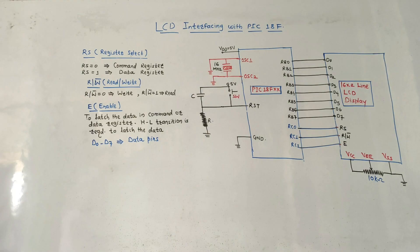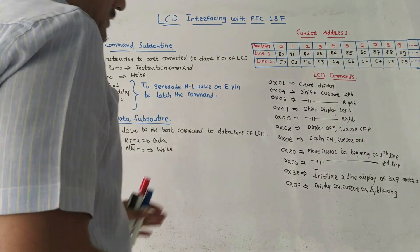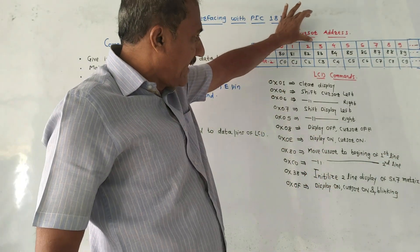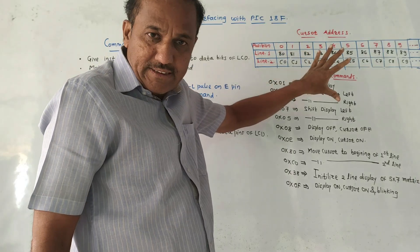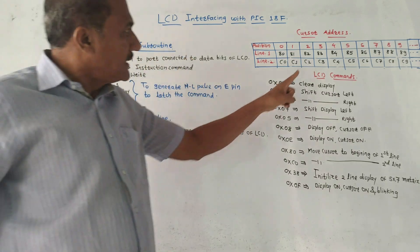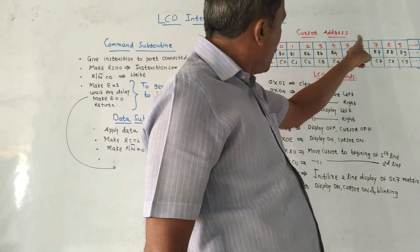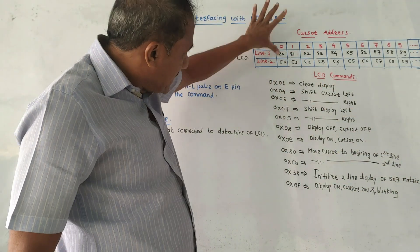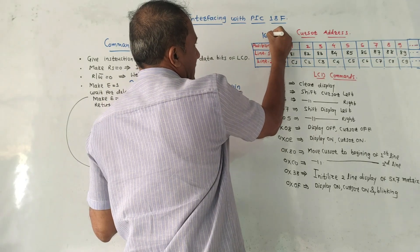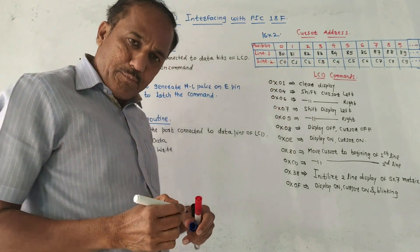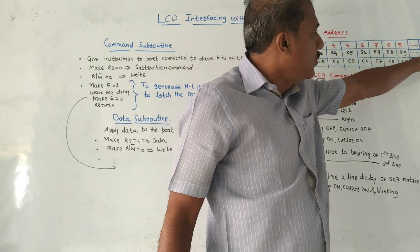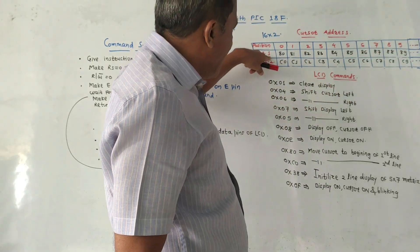Before starting the actual coding, you should know how to write the cursor address and what the corresponding LCD commands are, as well as what the command subroutine and data subroutine are. First let us discuss how to write the cursor address. Here in this table, we have entered the values for the 16x2 LCD display which is most commonly used. Different positions are written: 0, 1, 2, 3 up to 15, then line one and line two.